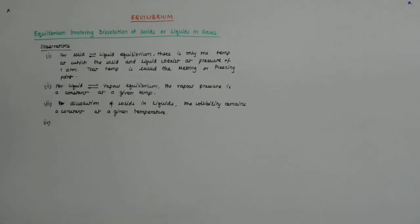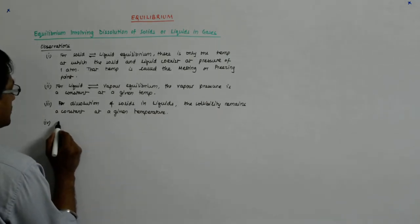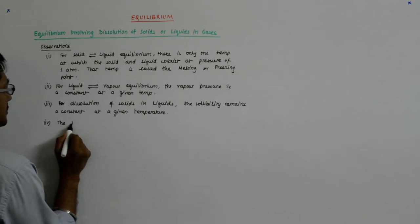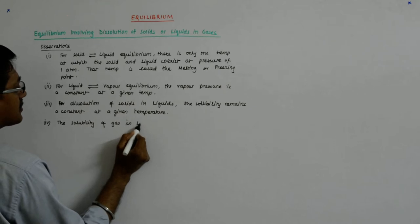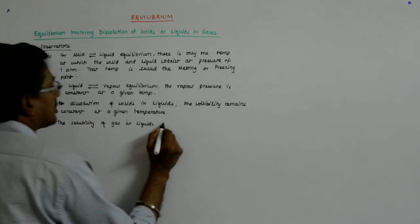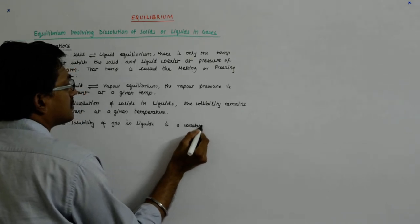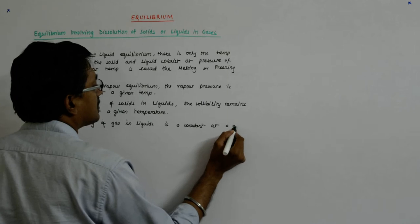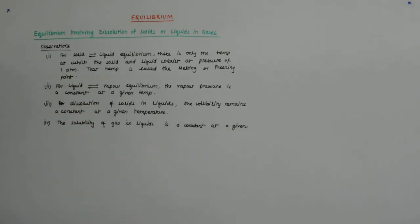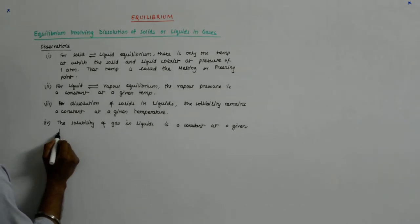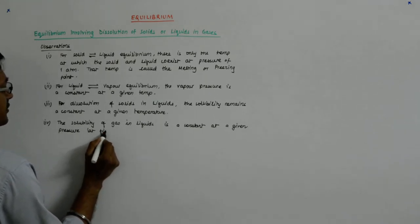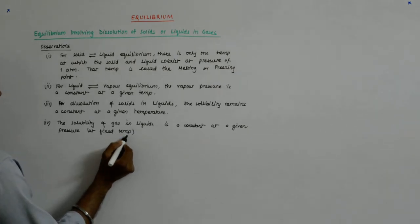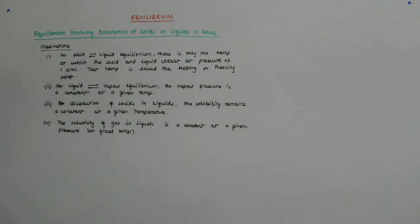Then we saw gases and liquids. The solubility of gas in liquids is a constant at a given pressure and fixed temperature. It has two variables, so it keeps on changing.